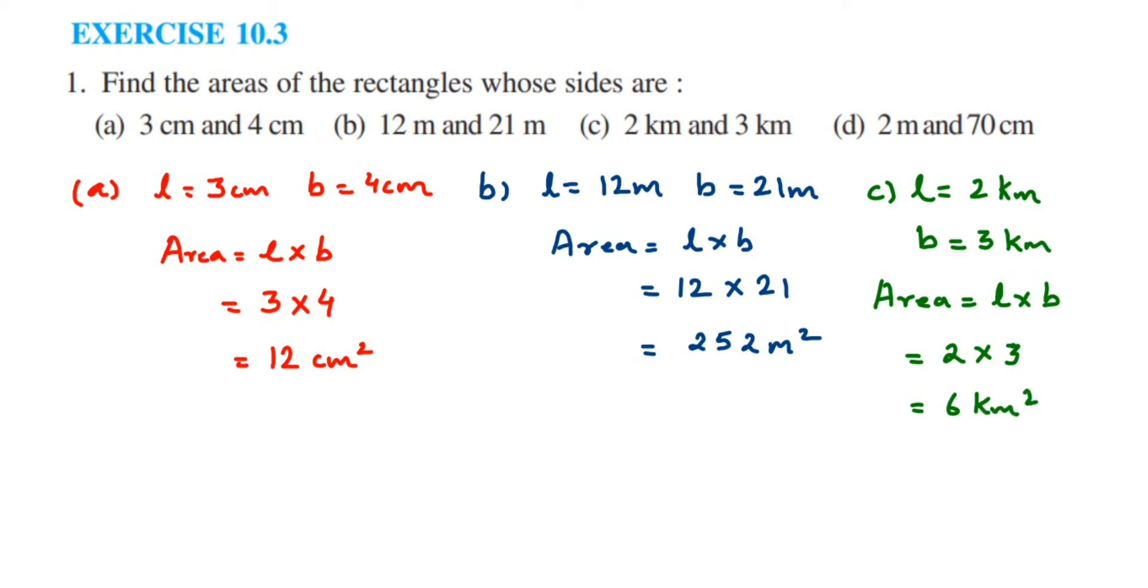Now in the next one, the fourth question, we have a different unit. We have meter and centimeter. So before we solve this, before we find out the area, we have to convert into the same unit. Now this is the last question. So this is problem D. So length is equal to 2 meter and breath is equal to 70 centimeter. Now you can either convert meter into centimeter or you convert centimeter into meter. So here I am going to convert centimeter into meter.